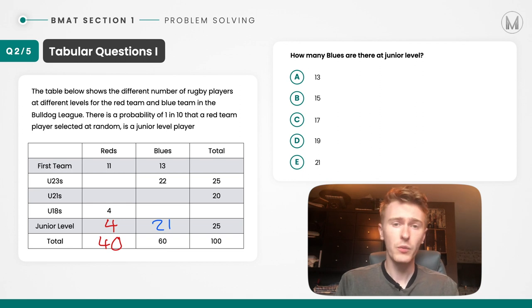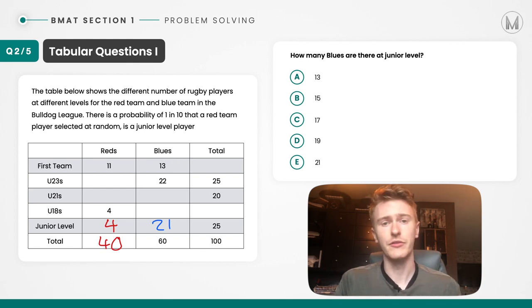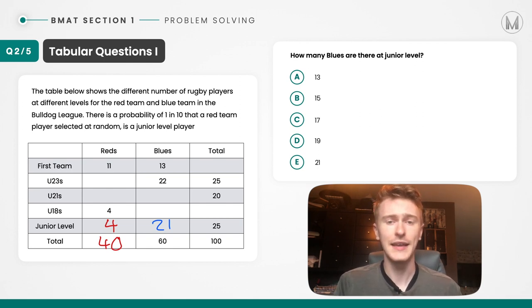If that wasn't the end of the question, you can see how you can fill in the other blanks depending on the information given. It's always good to start piecing together that information as soon as you can when you see a table with missing information. So the answer was E.